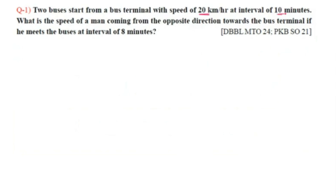Both buses have a speed of 20 km/h and depart from the bus terminal at 10-minute intervals. A person coming from the opposite direction meets the buses at 8-minute intervals. We need to find the speed of the man.